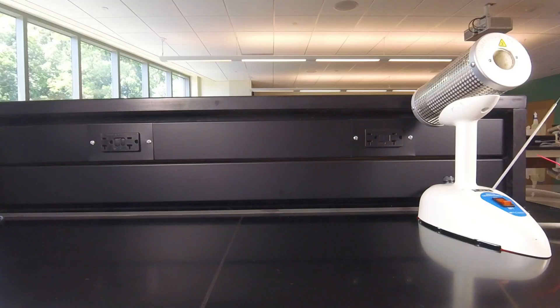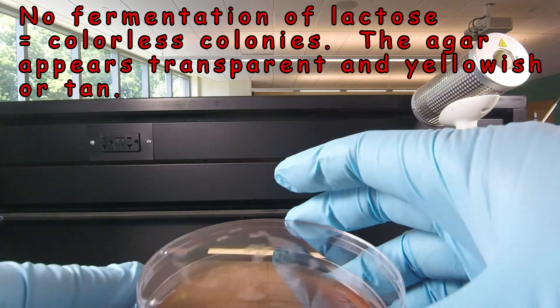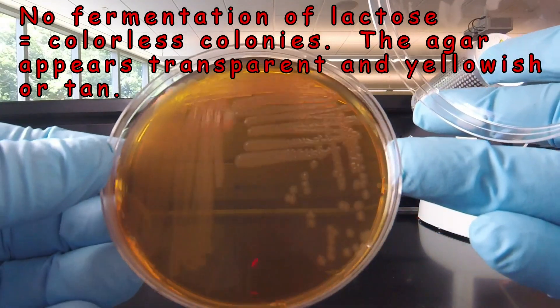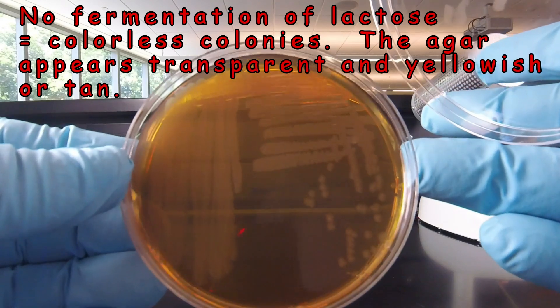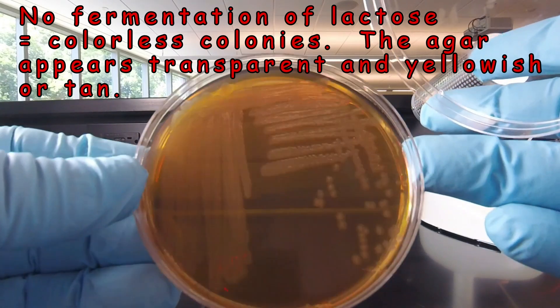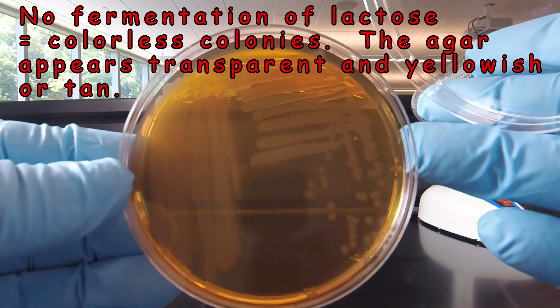And finally, if the bacterium does not ferment lactose, such as this Proteus mirabilis, the colonies appear colorless and the agar appears relatively transparent, kind of a yellowish tan color. So that would indicate no fermentation of lactose.